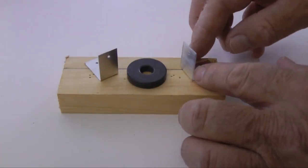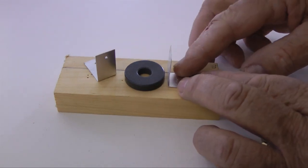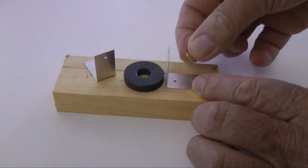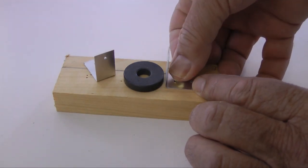Using a line or straight edge, align the two brackets on a block of wood. Use the magnet as a spacer. Leave a small space between the magnet and bracket.